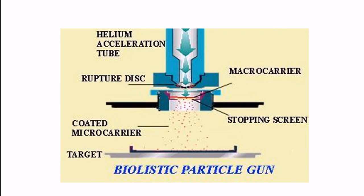You can see the overall setup here. To generate high pressure, we use a helium acceleration tube - the pressure generator produces 2000 to 2500 psi. Here you can see the microcarrier where DNA is attached. There's a rupture disc - once helium gas with high acceleration passes, the macrocarrier moves downward, rupturing the disc. The stopping screen stops the macrocarrier.